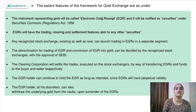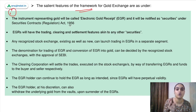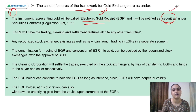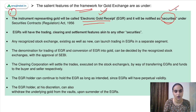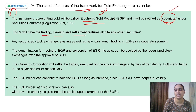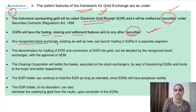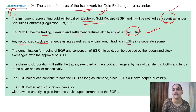Moving to the salient features of this framework: the instrument representing gold will be called electronic gold receipts. EGRs will be issued and traded on the stock exchange like other securities. The electronic gold receipts will follow trading, clearing, and settlement procedures similar to other securities. Any recognized stock exchange — existing or new — can launch trading in EGRs in a separate segment.